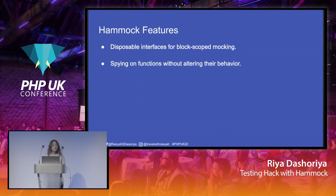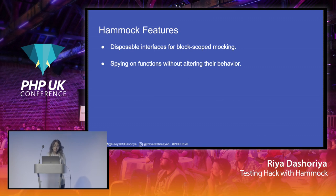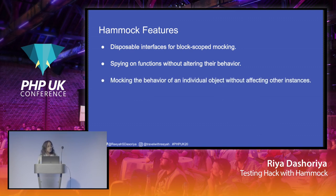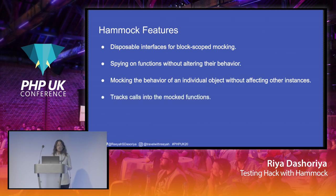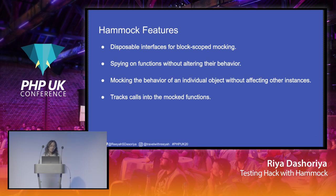Another benefit is spying on functions without altering their behavior. Especially if you want to measure a side effect — like if you want to see if the cache is getting called or not without altering the cache's behavior — you can use Hammock for that. It also allows you to mock an individual object without affecting any other object. You can create multiple objects of a class and mock them, but their mocking capabilities will be completely different. Hammock can also be used to track calls into the mocked functions, so you can assert on how many times a function was called.